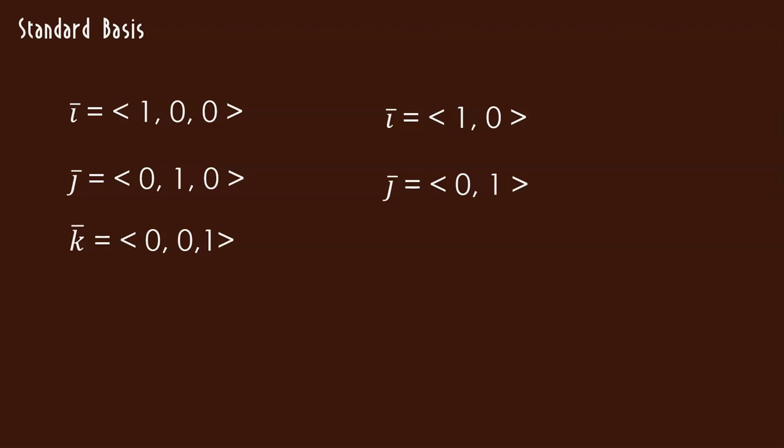One thing the standard basis is good for is writing a vector in terms of i, j, k. So you have numbers and vectors that you know how to play with. For example, if I've got v, the vector v equal to 2, negative 3, 5, I can write that as 2i minus 3j plus 5k. So we have standard basis.